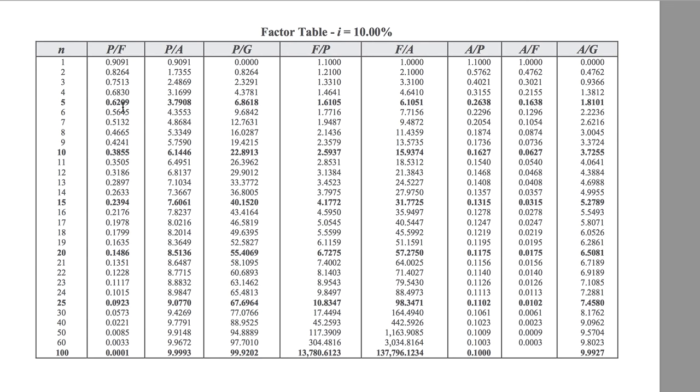Right. So it's not F slash P. It's not F given P because you don't know P because P is what they ask you to find. So this is P given F. So five years, 0.6209.